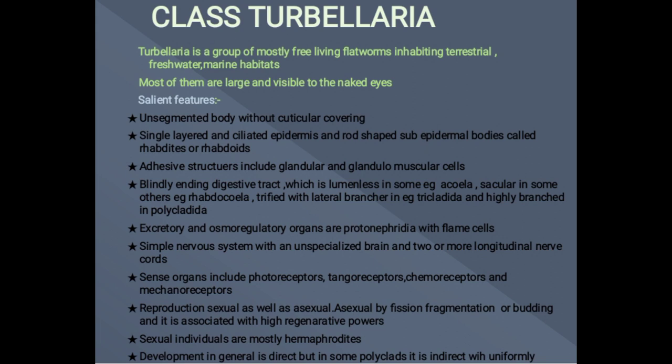It has also got adhesive structures that include glandular and glandulomuscular cells. It has got a blindly-ending digestive tract which is luminous in some like acoela, saccular in some like rhabdocoela, and also highly branched in some like polycladida.